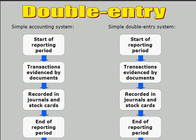We start with the reporting period. At the start of the reporting period, we then have transactions evidenced by documents, which are then recorded into the journals and the stock cards. And we get to the end of the reporting period. So clearly there are a lot of similarities between the simple accounting system on the left and the simple double entry accounting system on the right.